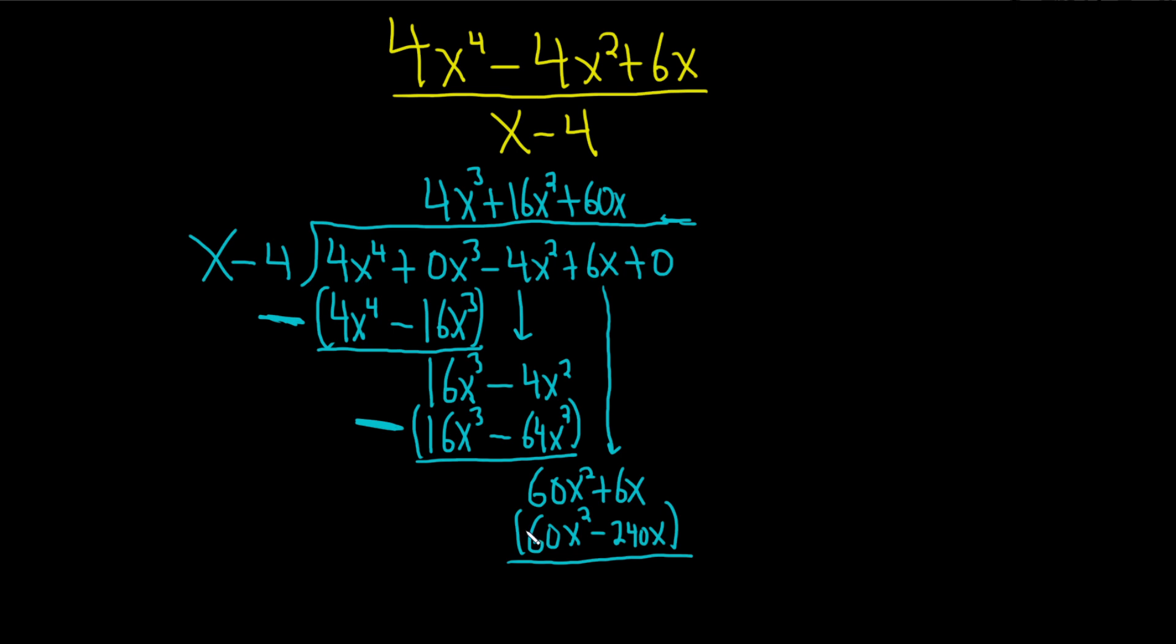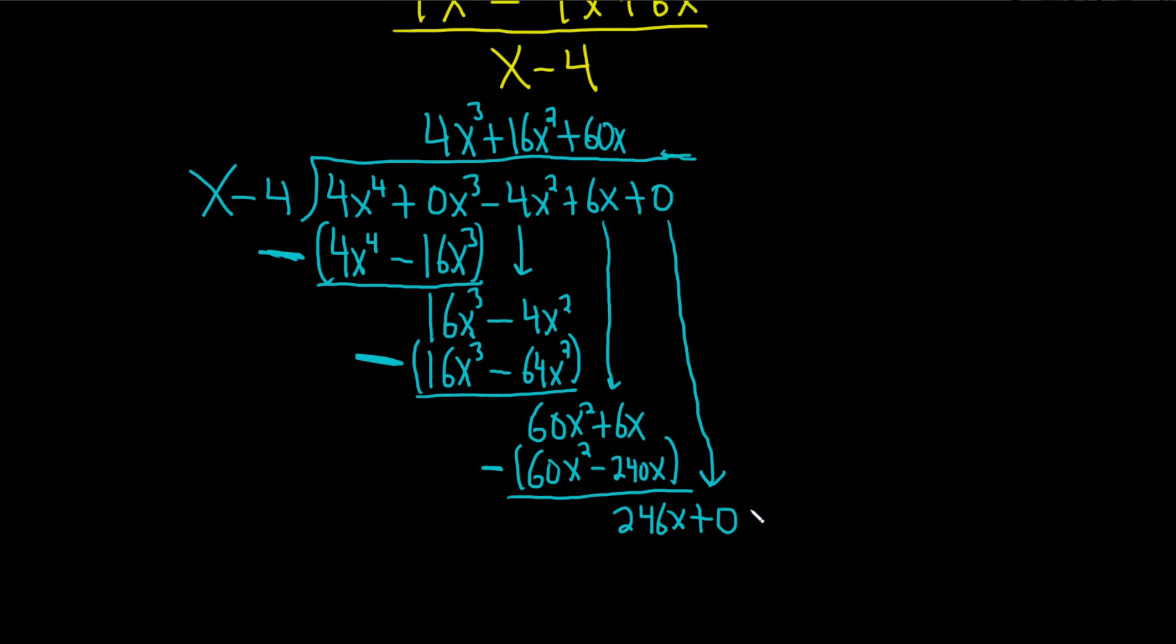Parenthesis, giant negative sign, add. These cancel. You're going to get 6 plus 240, so 246x. Are we done? No, we're not. Because we still have another one to bring down. That's right. We're going to bring down the zero. And then you say, what do you multiply by x to get 246x? Well, 246.